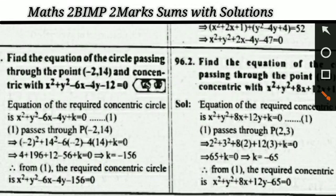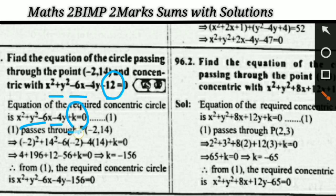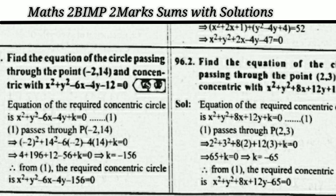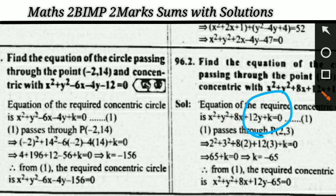For the concentric circle question, write: x² + y² − 6x − 4y + k = 0, replacing the constant −12 with k. To find k, substitute the given point into this equation. Similarly, find the equation of the circle passing through (2, 3) and concentric with the given circle — same method: take constant as k, substitute the point to find k.